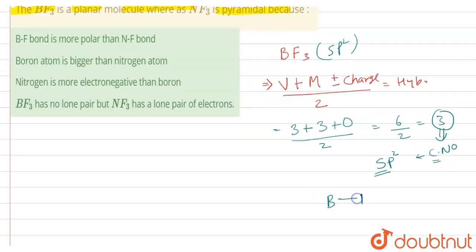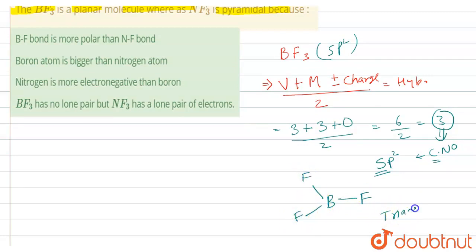With SP2 hybridization, BF3 gives a triangular planar structure, with three fluorine atoms arranged around boron. So BF3 is a planar structure. Now let's talk about the second molecule, NF3.